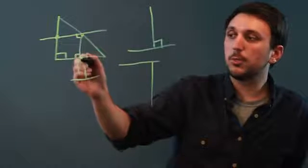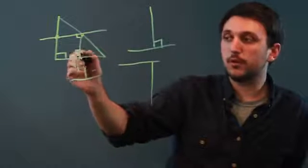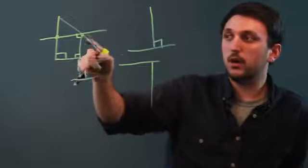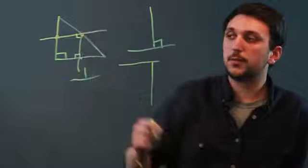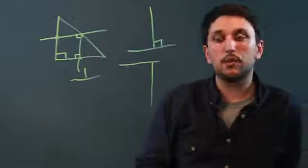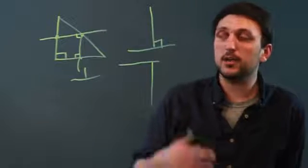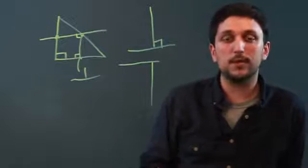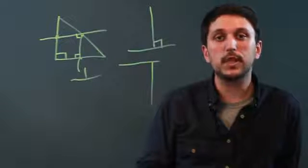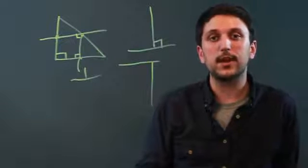So, your perpendicular bisectors form three midpoints of the triangle. So, you've just learned how to find a perpendicular bisector of a right triangle. I'm Charlie Kasov. Thanks a lot.